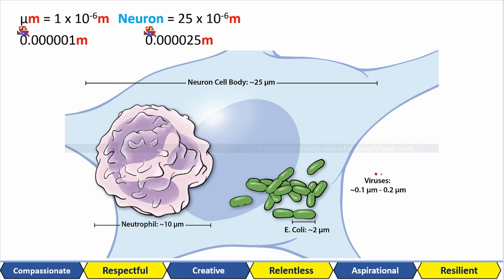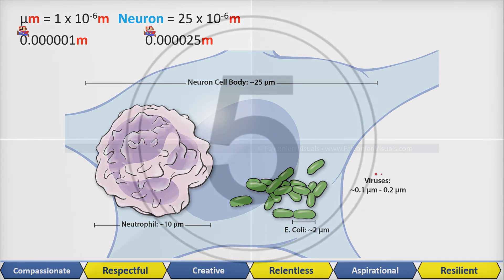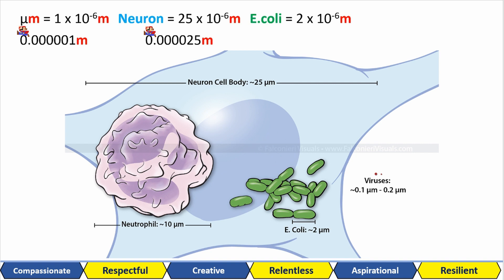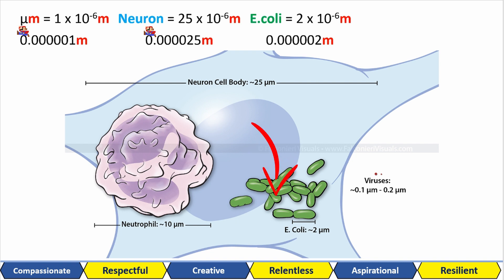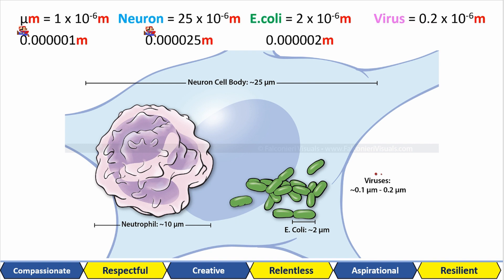Now pause the video and try to do what we just did for the neuron, for both E.coli and the virus. Use the 0.2 micrometer value for the virus. E.coli should be 2 times 10 to the minus 6 meters, meaning 6 zeros in front of your 2. The virus is trickier — it should be 10 times smaller than the bacteria. So 0.2 times 10 to the minus 6 meters, which is technically 2 times 10 to the minus 7 meters, with 7 zeros in front.